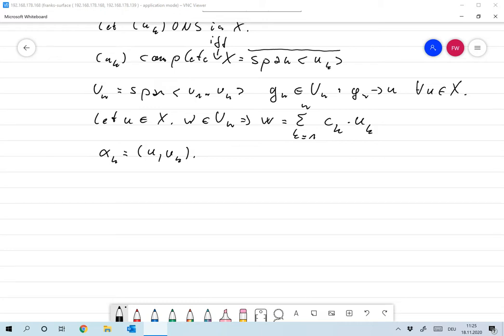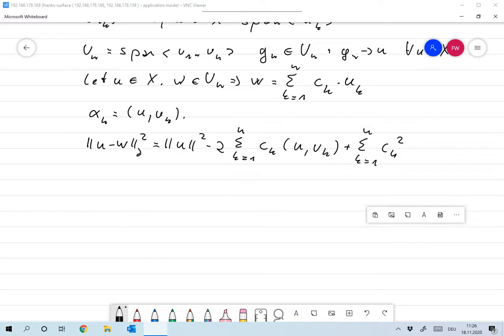We have that the norm of U minus W squared is the same as the norm of U squared minus 2 times the sum from 1 to N CK times the scalar product of U and UK, plus the sum from K from 1 to N CK squared. And actually that would be norm of W squared. But with what I just noted, this is nothing but the sum of the CK squared.